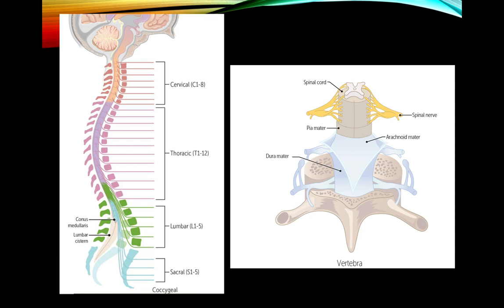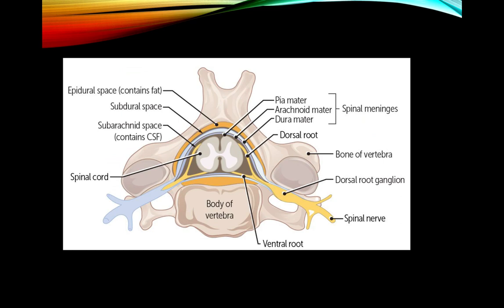The spinal cord has the same coverings as the brain: pia, arachnoid, and dura. The same conditions that affect the brain, like subdural or epidural hematoma after trauma, can involve the spinal cord. The most common things affecting the spinal cord are disc herniation or encroachment from degenerative changes and calcium buildup called osteophytes, which can compress the nerve roots that exit or compress the spinal cord itself.